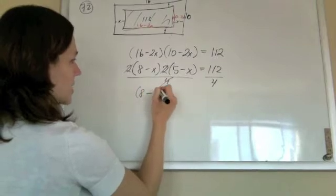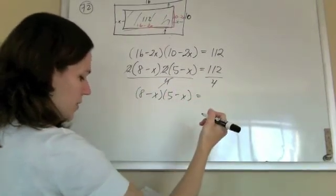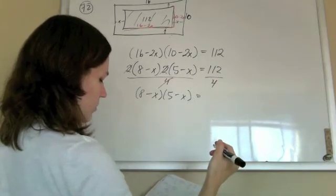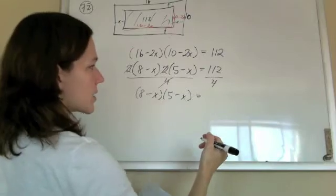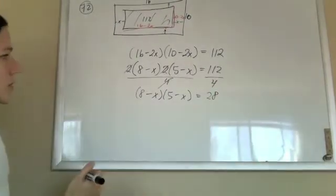That leaves me with (8 - x) times (5 - x). And 112 divided by 4 gives me 28.